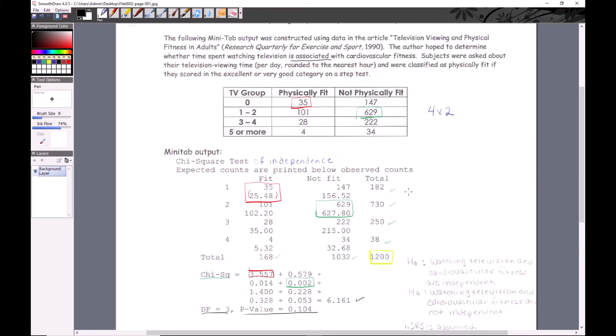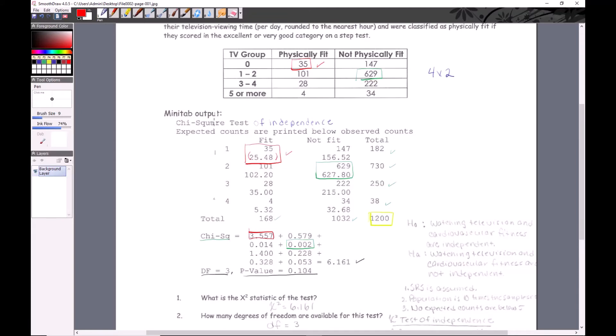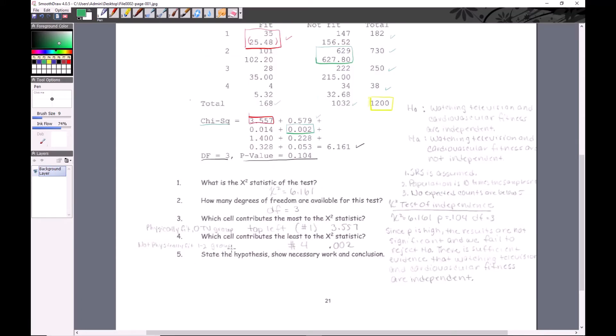I filled in the chi-square test statistic, wrote in the degrees of freedom. Which cell contributes the most to the chi-square statistic? It happens to be the one I circled in red - it's the physically fit who watch no TV. If you want to know the smallest contributing value, it would be the one in green - the not physically fit TV watchers of one to two hours. You can number them, but the description is probably as good or better.